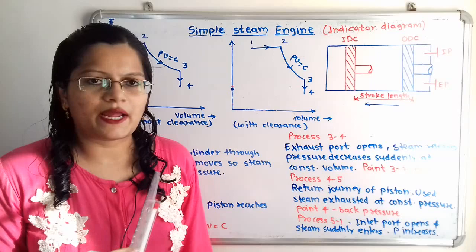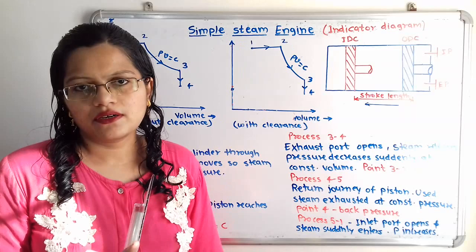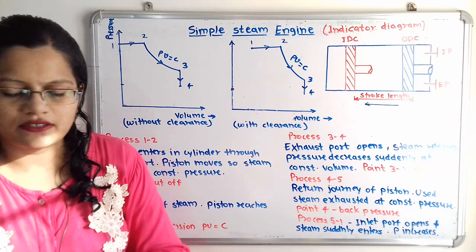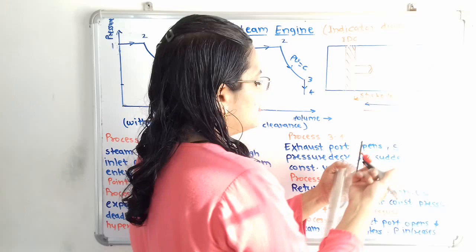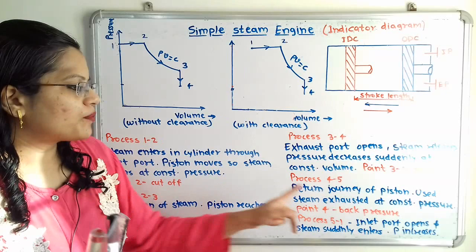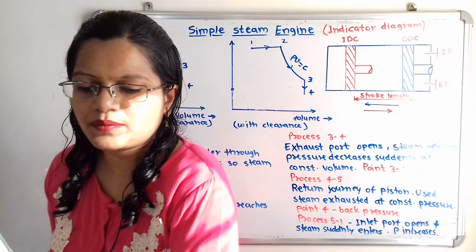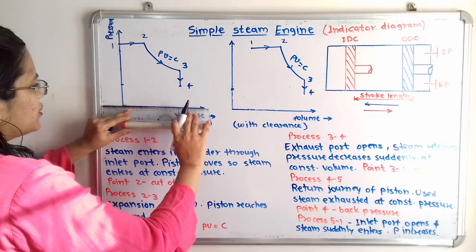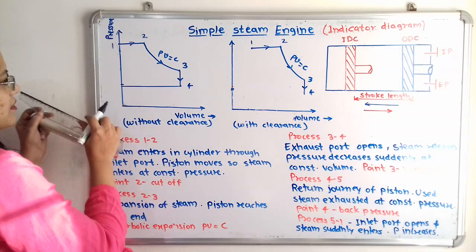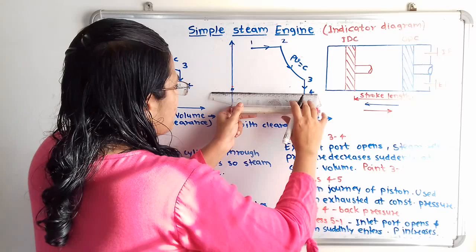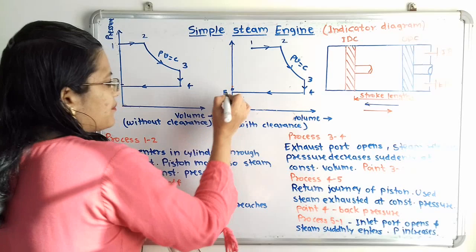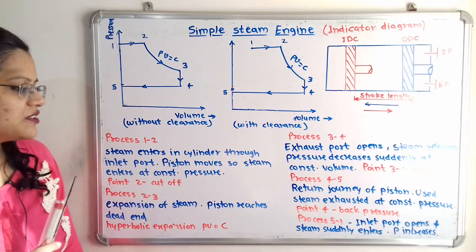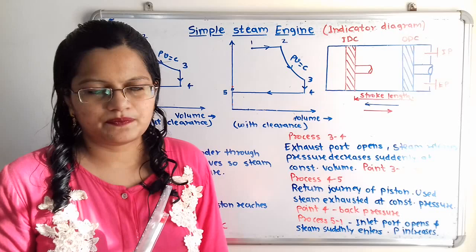Process 4 to 5 is the return journey of the piston — from the inner dead center back to the outer dead center. During this process, used steam is exhausted at constant pressure through the exhaust port. We show this as a horizontal line back to point 5. Point 4 is known as the back pressure point.